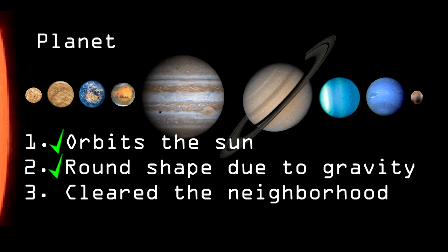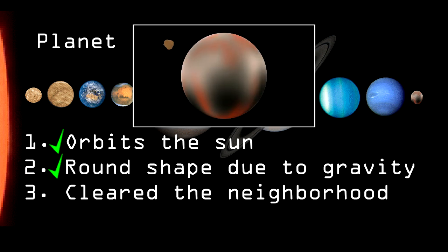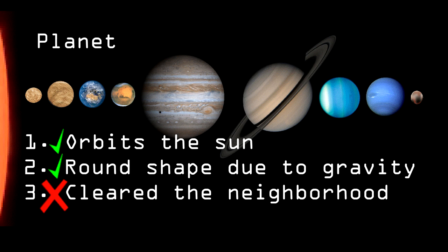And three, the planet has cleared the neighborhood around its orbit. This is done either through collisions, or redirecting objects away. And this is where Pluto fails. Pluto accounts for only a small fraction of the mass around its orbit.